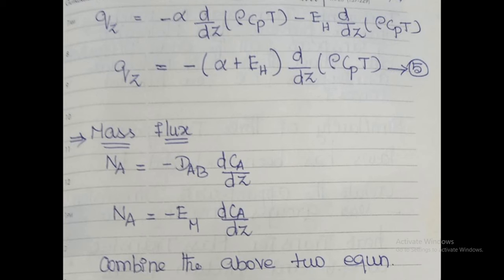Combining both equations, the total heat flux equals the heat flux due to laminar flow plus heat flux due to turbulent flow. So Qz equals minus alpha times d/dz(rho Cp T) minus EH times d/dz(rho Cp T). Taking the common term, the final expression is: Qz equals minus (alpha + EH) times d/dz(rho Cp T). This is the total flux in heat transfer.